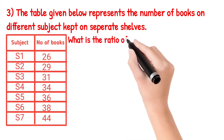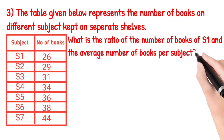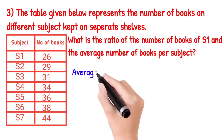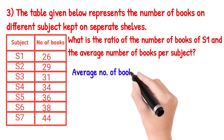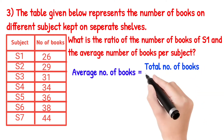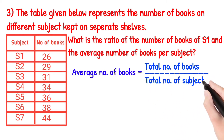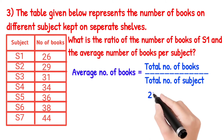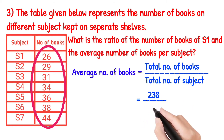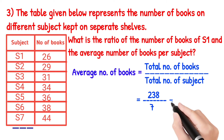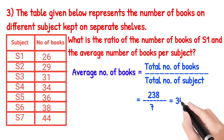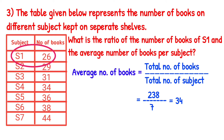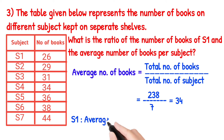The table given below represents the number of books on different subjects. What is the ratio of the number of books of S1 to the average number of books per subject? Average number of books per subject is total number of books divided by total number of subjects. All the books are added to 238, divided by 7.